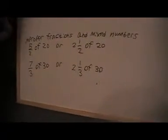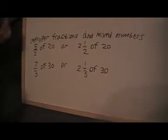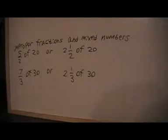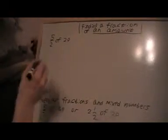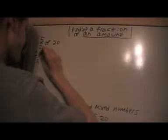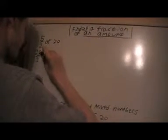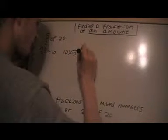So now I want to talk about improper fractions and mixed numbers. So I want to find five halves of 20. Now it's the same method. Divide 20 by 2 and get 10. Now times the 10 by 5 and get 50.